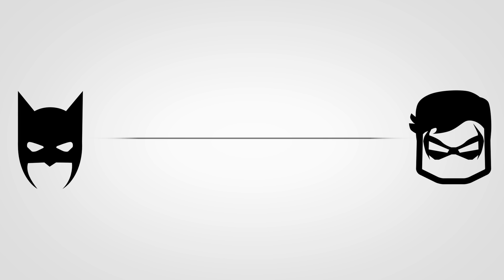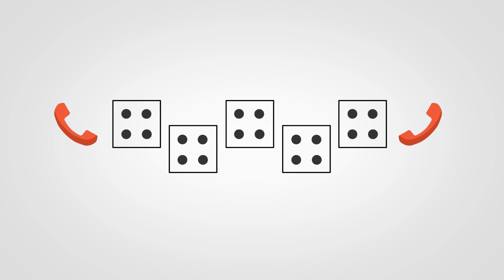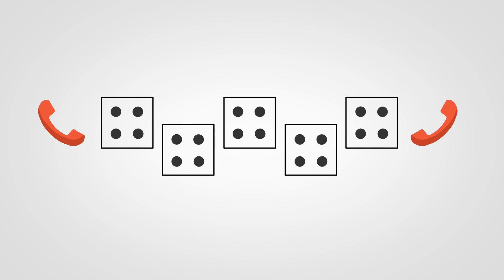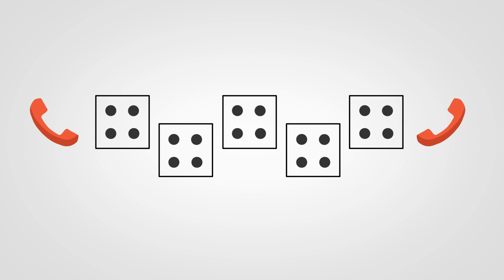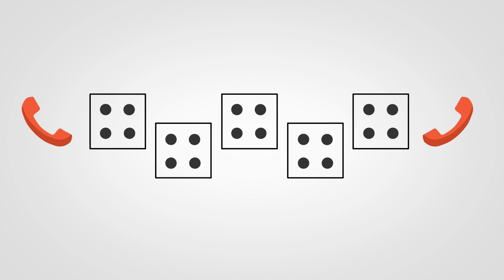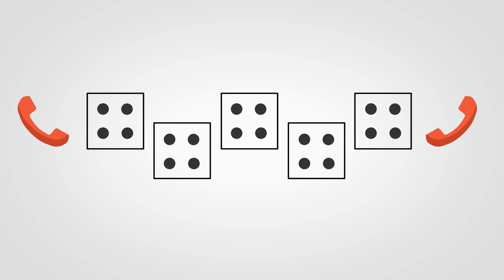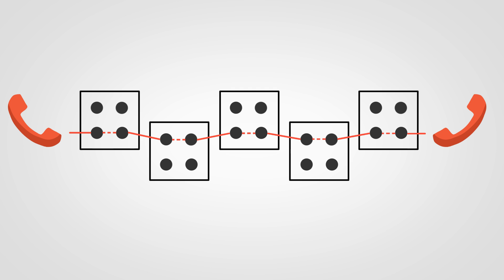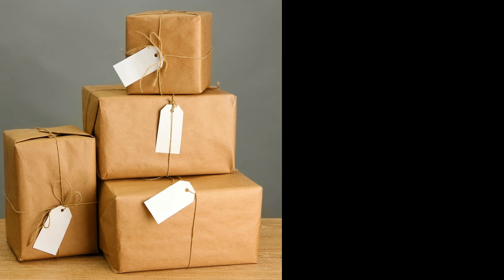The main difference lies in the way the communication channel is established and how data is transmitted through it. In telephony that utilizes the public switched telephone network, data is transmitted using circuit switching technology, which allows communication channels to be established by connecting two network nodes. Switches within the system help form a circuit between two phones, which guarantees full channel bandwidth and stays connected for as long as the communication session lasts.